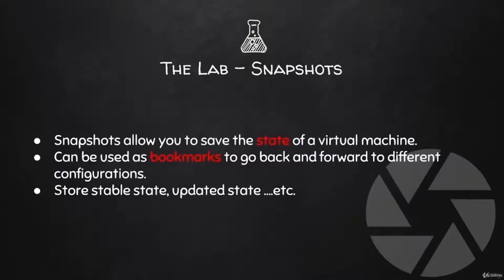For example, we can take snapshots of our fresh installation of the operating systems. In the future, if we update or configure something or break something, you can literally just go back to the fresh install — back to factory settings, if you want to call it. Then if you did something and wanted to go back to your updated system, you can do that as well. You can take a snapshot whenever you want to store the state of the machine and go back and forth between these states.